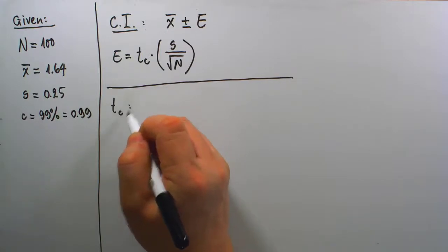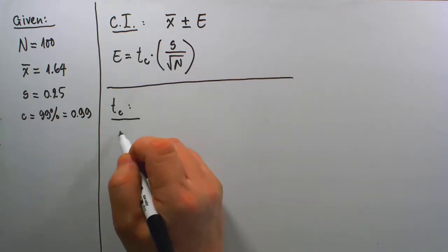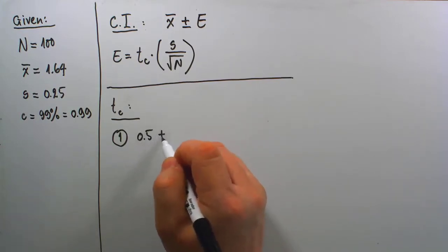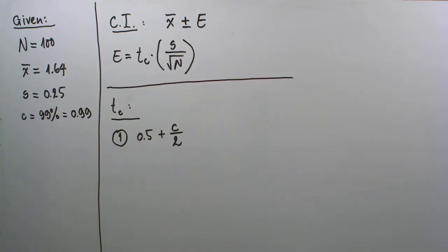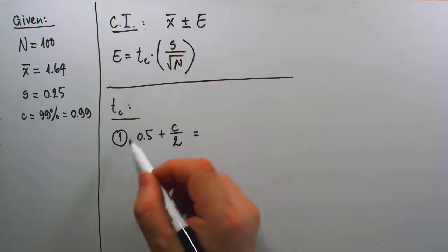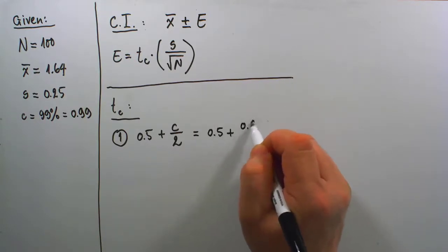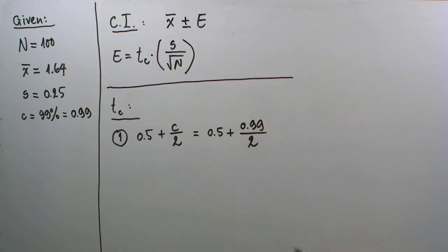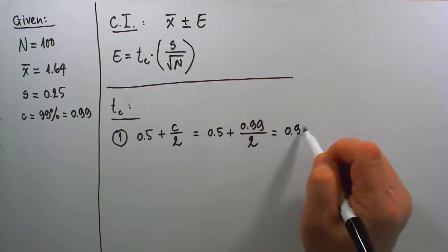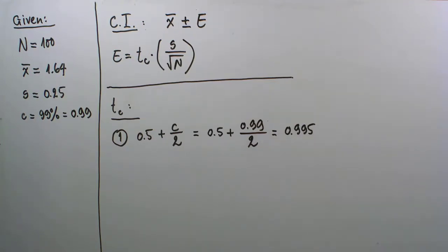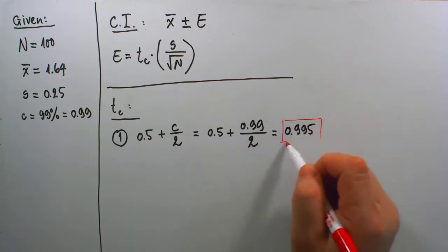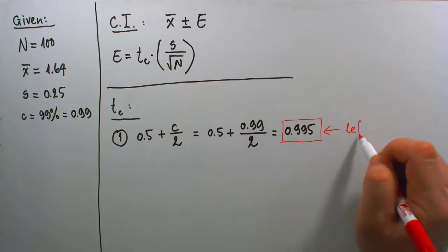For calculating tc value, step one will be: 0.5 plus half of our confidence level. With our confidence level being 0.99, we're looking at 0.5 + 0.99/2, and my calculation came out being 0.995. Later when we use this value to input into a calculator, this value 0.995 will be understood or regarded as the left area.